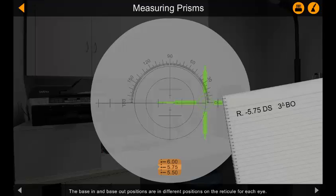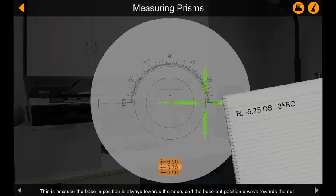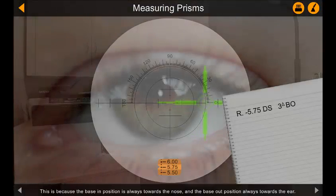The base in and base out positions are in different positions on the reticule for each eye. This is because the base in position is always towards the nose, and the base out position always towards the ear.